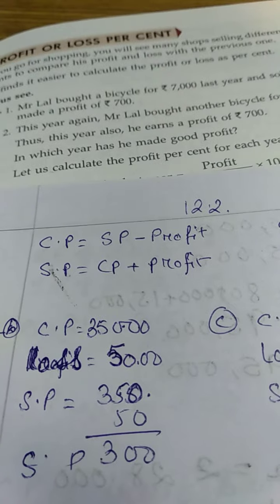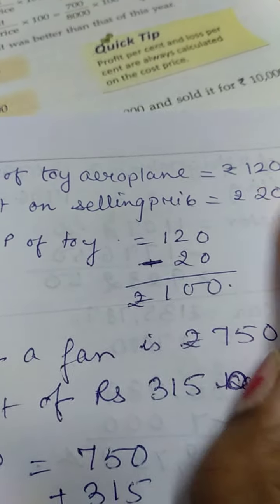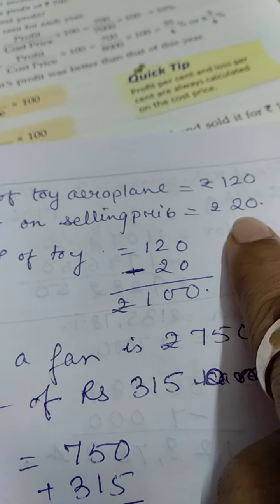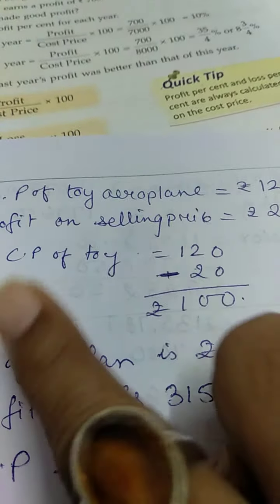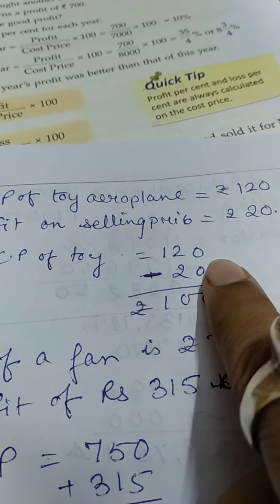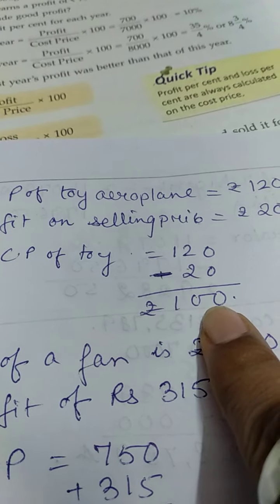So, let's do the sum. SP of the toy airplane is 120 and profit on selling price is Rs. 20. So, what is the CP? Therefore, CP of the toy airplane is 120 minus 20. That means CP is 100.